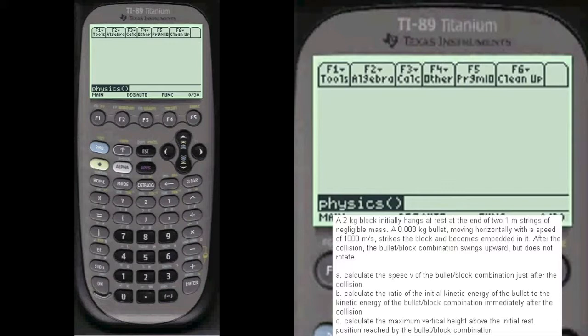After the collision the bullet block combination swings upward but does not rotate. Part A: Calculate the speed of the bullet block combination just after the collision. Part B: Calculate the ratio of the initial kinetic energy of the bullet to the kinetic energy of the bullet block combination immediately after the collision.